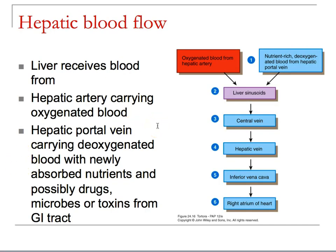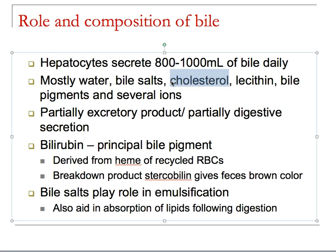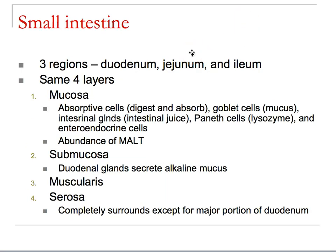Nutrient-rich deoxygenated blood from the hepatic portal system travels into sinusoids where oxygen-rich blood from the hepatic artery comes in as well; ultimately everything broken down or cleared out returns to the right atrium of the heart. Hepatocytes make about a liter of bile daily — mainly bile salts. There's some cholesterol, which is the building block for all steroid hormones, and bile pigments including bilirubin derived from the heme of recycled red blood cells. The breakdown product stercobilin gives feces its color.